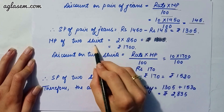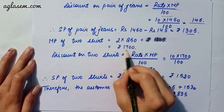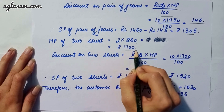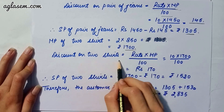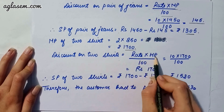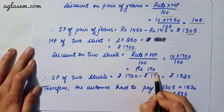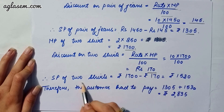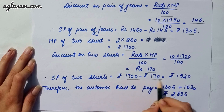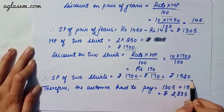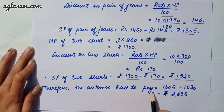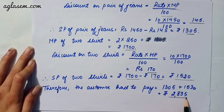The market price of two t-shirts is 2 into 850, that is 1700. Discount on two t-shirts is 10 into 1700 divided by 100, giving rupees 170. Selling price of two t-shirts is 1700 minus 170, giving rupees 1530. So the customer had to pay rupees 2835.